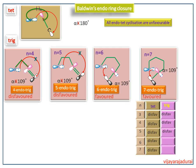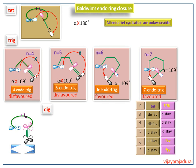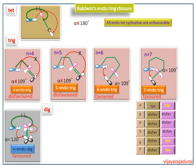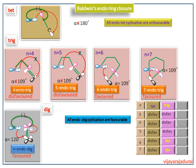Next we see the endo ring closure rule for the dig (digonal) hybridized molecule. This is the general structure of the dig-hybridized molecule. Here the strain is released, so the nucleophile can attack the electrophilic carbon atom with a favorable angle of 120 degrees to undergo cyclization. So it is a favorable reaction. All endo-dig cyclizations are favorable.